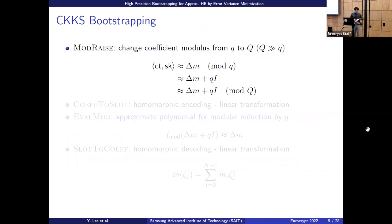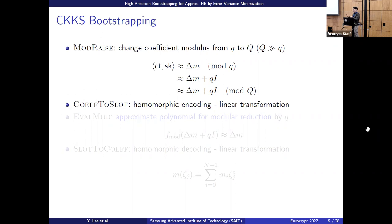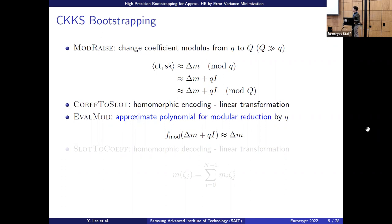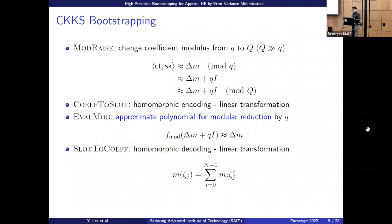Briefly reviewing CKKS bootstrapping: after many rescalings we have a very small ciphertext modulus, and we want to increase it to large Q. We want to remove the multiple-of-Q term. To perform coefficient-wise operations we do a linear transformation called 'coeff-to-slot,' then perform modular reduction via polynomial approximation — we call it f_mod — and finally we do 'slot-to-coeff,' the inverse operation. The slot-to-coeff value is m_i multiplied by zeta_i, where m_i are message coefficients and zeta_i is a root of unity.